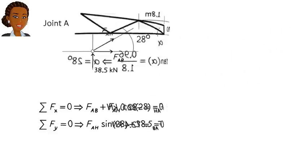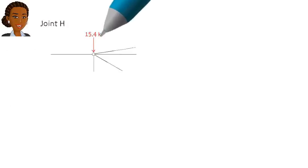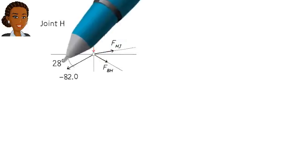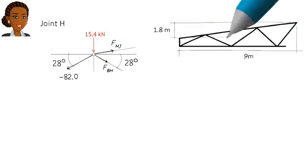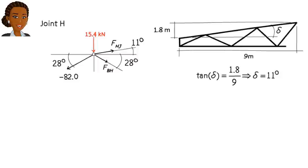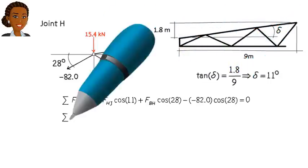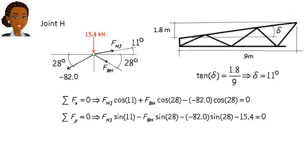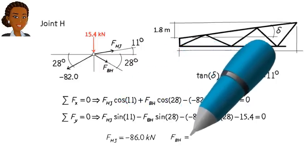Now we move to joint H. Here is the free body diagram of the joint. Here are the joint equilibrium equations. And here are the unknown forces.